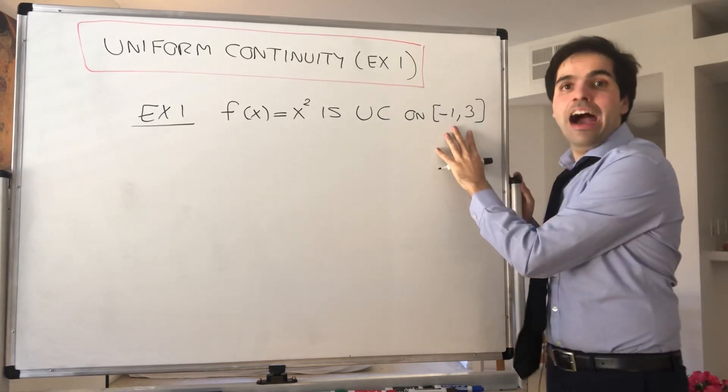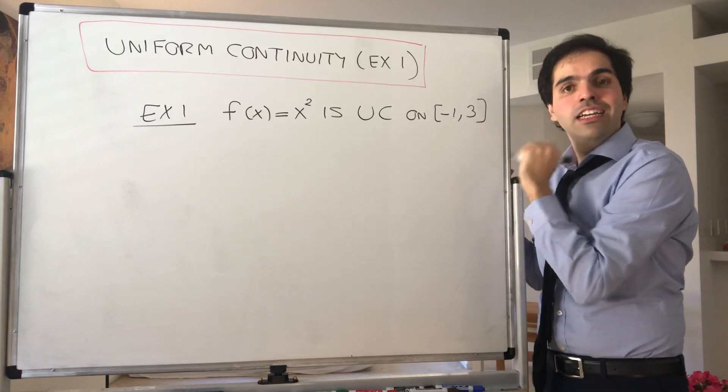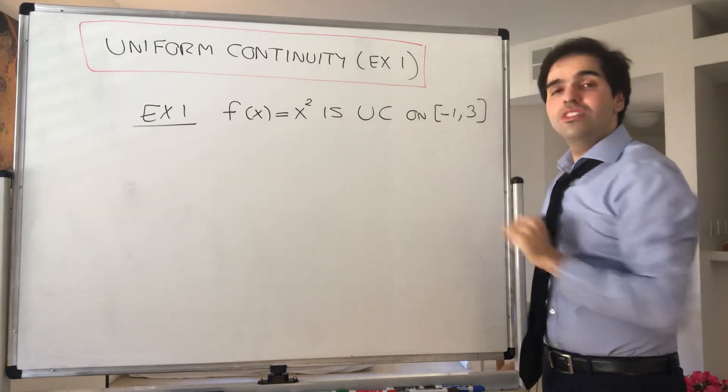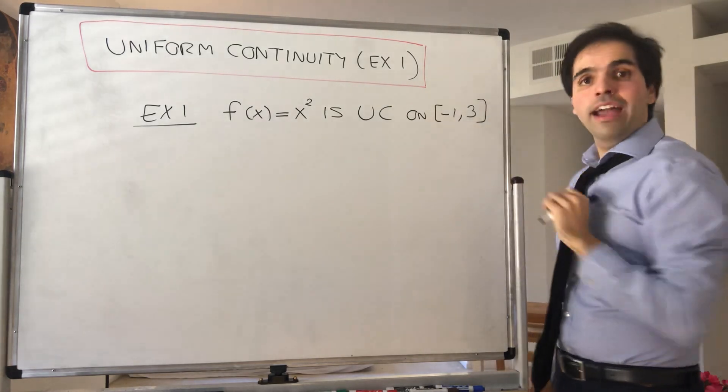And the interval matters. If I give you R instead of [-1, 3], then it would be false. This would not be uniformly continuous on all of R, but it is on [-1, 3].